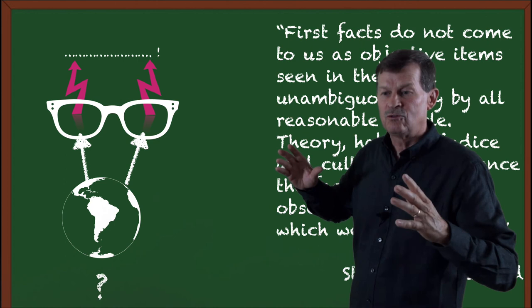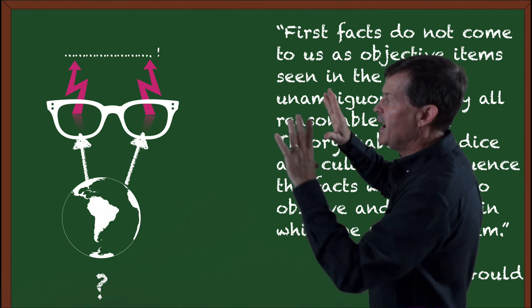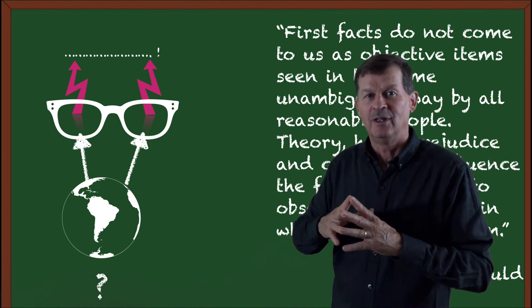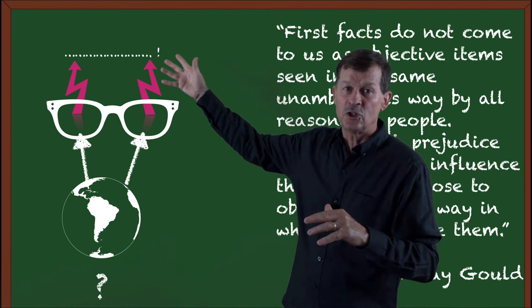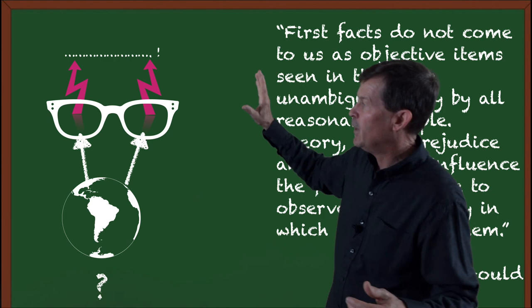So those factors form what would be the weltbild, which is the world picture. So that picture of the world, we then look out at the world through those lenses and we see the world in a particular way, in a very unique way, which is influenced by those four factors mentioned by Stephen Jay Gould, which then gives us a result or a conclusion. But that conclusion is based on those rules, those regulations, that grid implemented by the person interpreting.